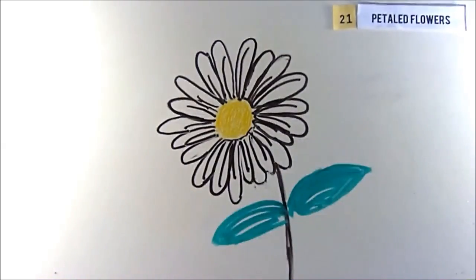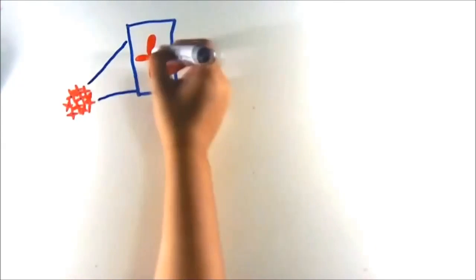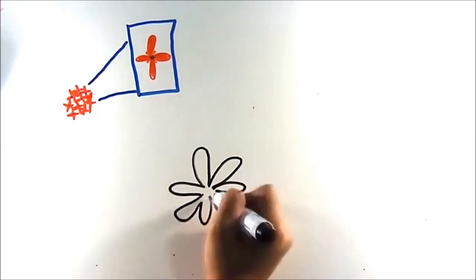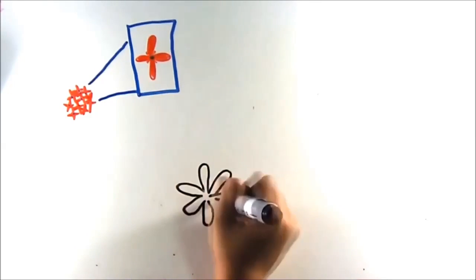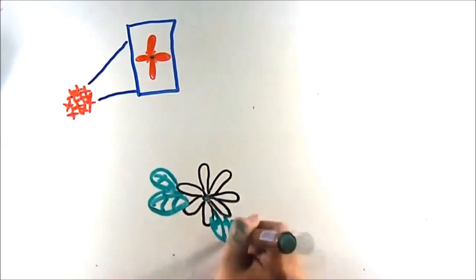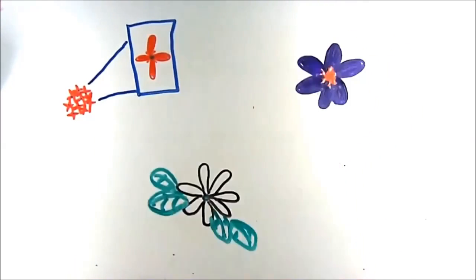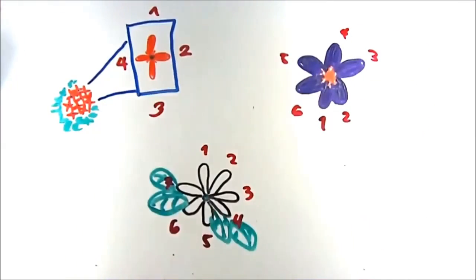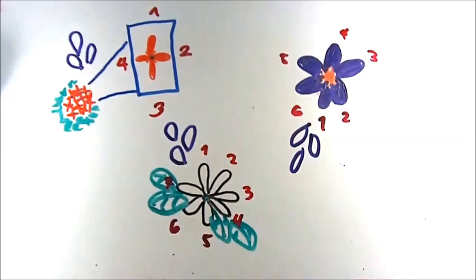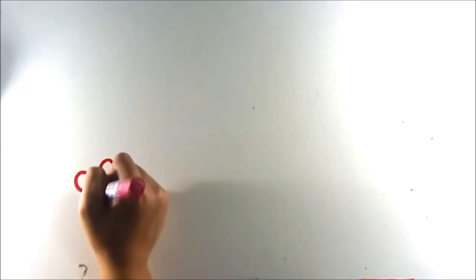You may have noticed that there are flowers that do have a number of petals that are not in the Fibonacci sequence, like the santan with only four petals, the sampaguita with six, and others.